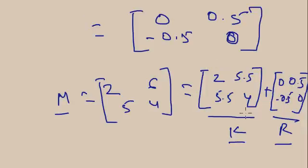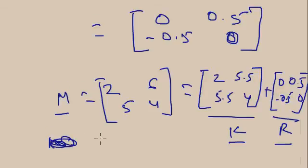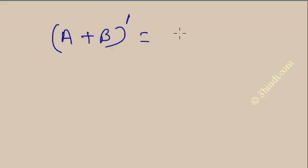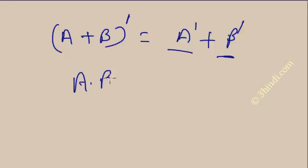You now understand what the transpose of a matrix is, its properties, and how to make the transpose — just remove the row and make it a column. Also remember: if P is a 3×2 matrix, then P dash will be a 2×3 matrix. The number of rows and columns are swapped in the transpose.